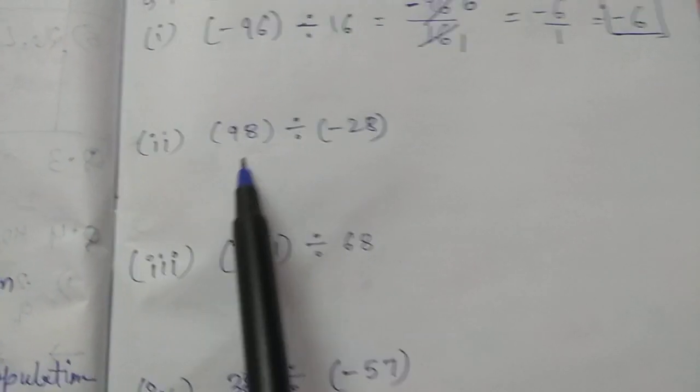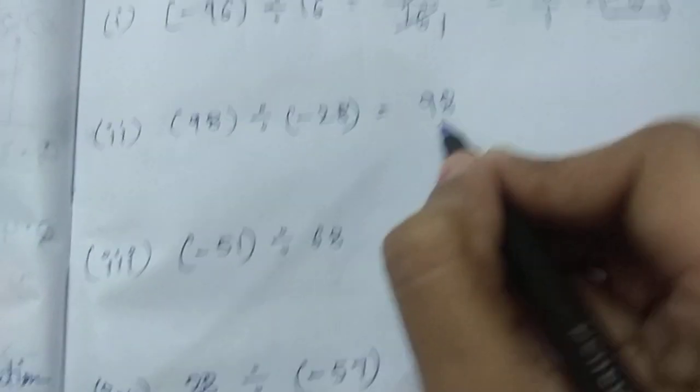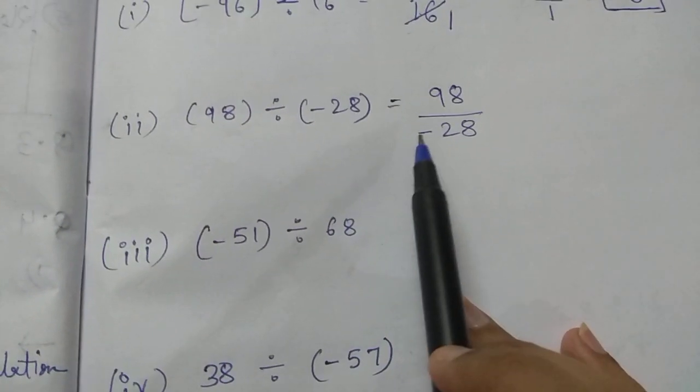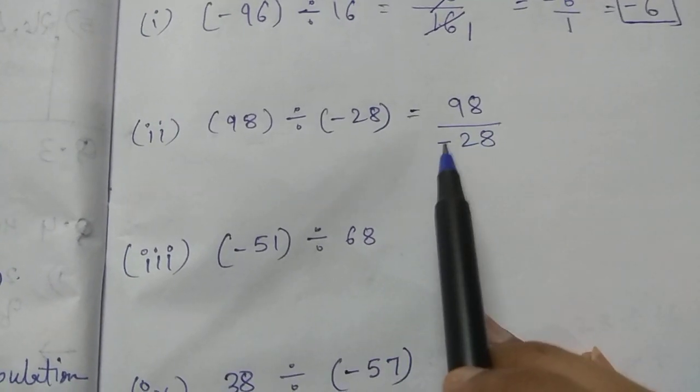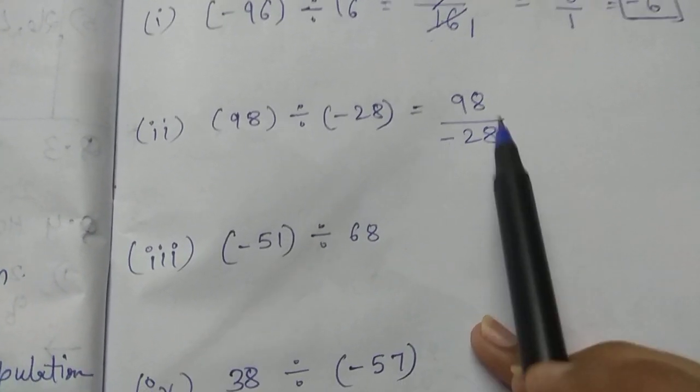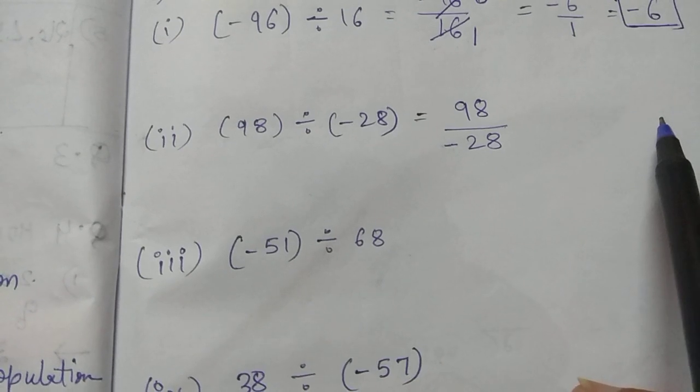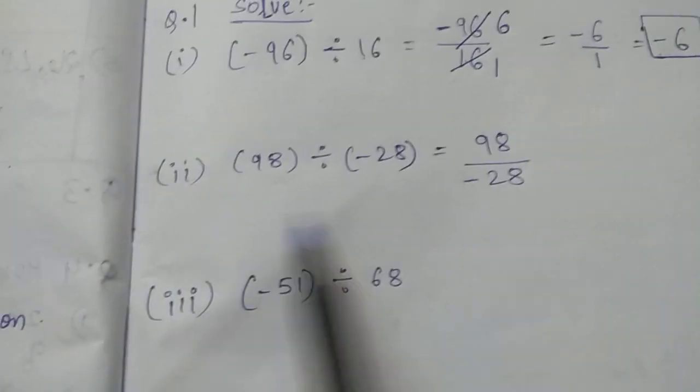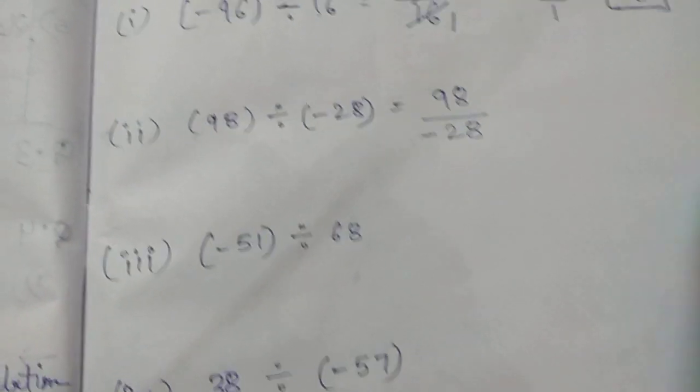Next, 98 divided by negative 28. 98 in numerator, negative 28 in denominator. Now remember the very first thing is, negative sign we never write in denominator. Remember this, negative sign we never write in denominator. So whatever will be our final answer, we will be writing negative sign in numerator. Here again, negative, positive, that's why our final answer is in negative. Again, positive, negative, so that's why our final answer will be negative.